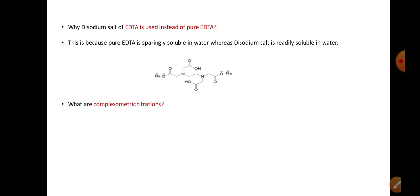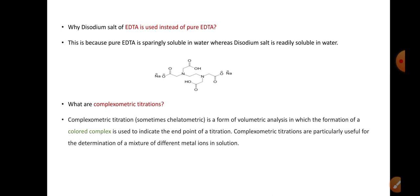What are complexometric titrations? These are titrations which are sometimes called chelatometric titration because here the ligand is used. It is a form of volumetric analysis in which the formation of colored complex is used to indicate the end point of the titration. Complexometric titrations are particularly useful for the determination of a mixture of different metal ions in solution.